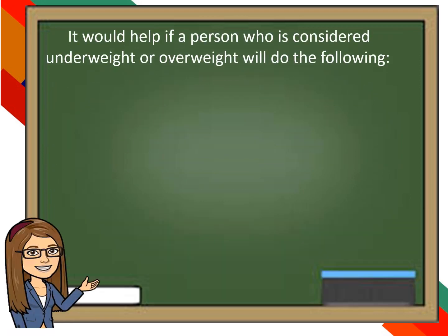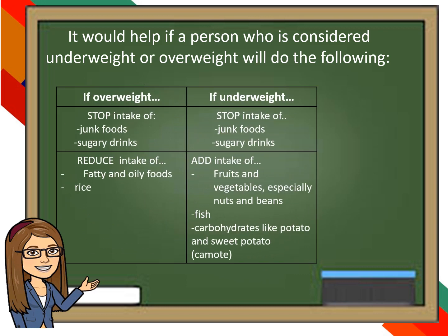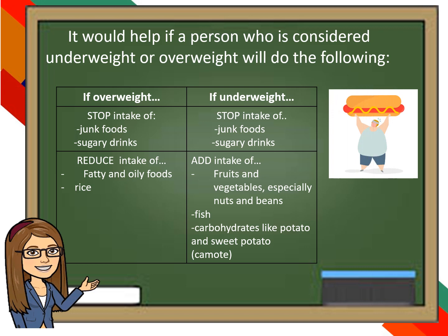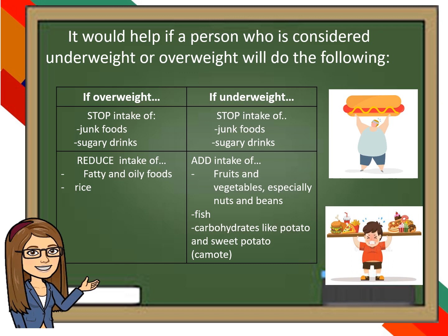It would be helpful if a person who is considered underweight or overweight does the following. If overweight: stop intake of junk foods and sugary drinks, and reduce intake of fat and oily foods. If underweight: stop intake of junk foods and sugary drinks, and add intake of fruits and vegetables, especially nuts and beans, fish, and carbohydrates like potato and sweet potato.